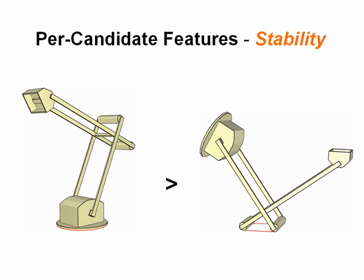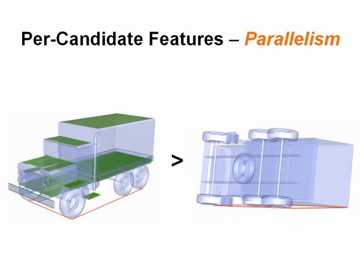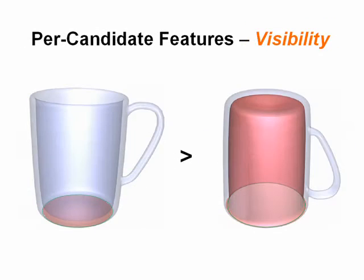Generally, we prefer bases that are more stable, bases perpendicular to symmetry planes, we prefer bases that have larger areas of model surface parallel to them, and lastly, bases which lead to a bigger part of the model being visible.